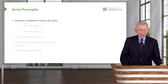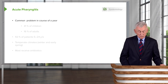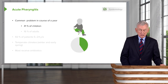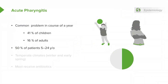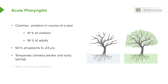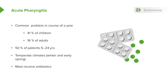In terms of the epidemiology, this is a very common problem. Almost 50% of children will have an episode of pharyngitis, and almost 20% of adults have pharyngitis in the course of one year. Most patients are between the ages of 5 and 24. In temperate climates, most pharyngitis occurs when people are indoors — winter and early spring. Unfortunately, when patients go to the doctor with pharyngitis, they get antibiotics far too often. Antibiotics are not necessary in many cases.